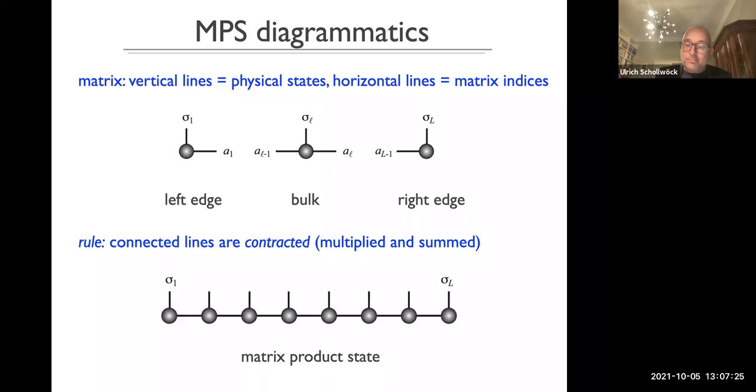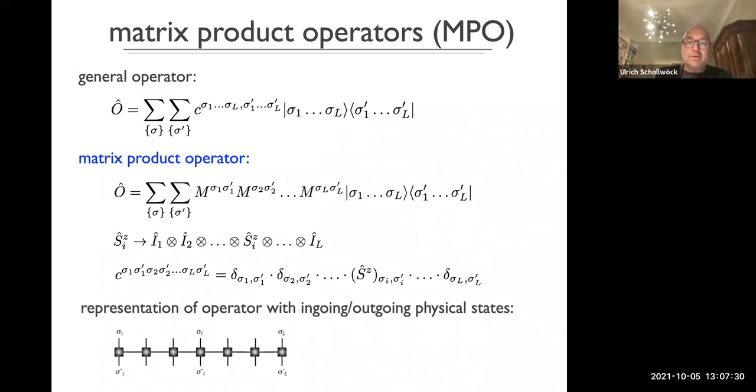Where there are matrix product states, there must be matrix product operators. The most general operator you can write down takes any state of the computational basis, puts out any state of the computational basis with some amplitude. So there are again, exponentially many coefficients, and you apply the same idea that the whole thing is happening locally. So you factorize it again into matrices.